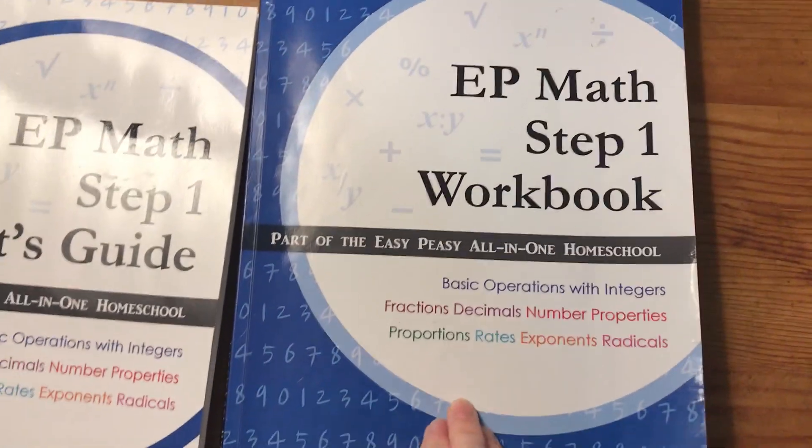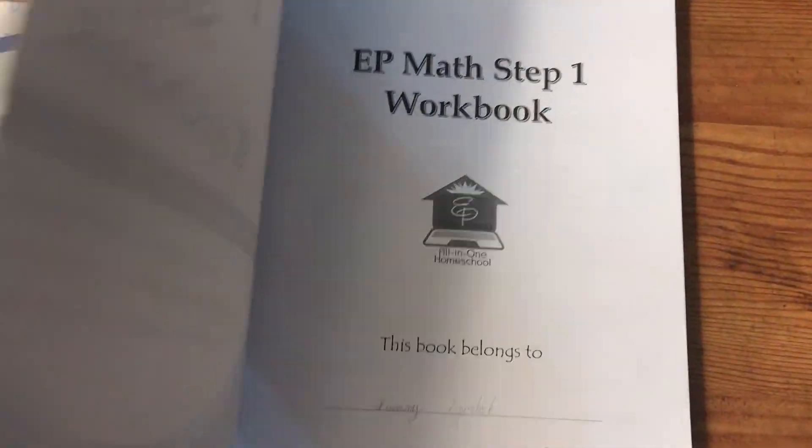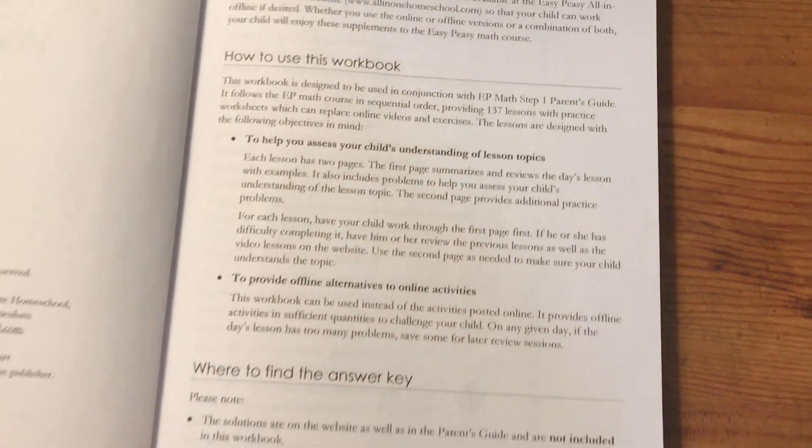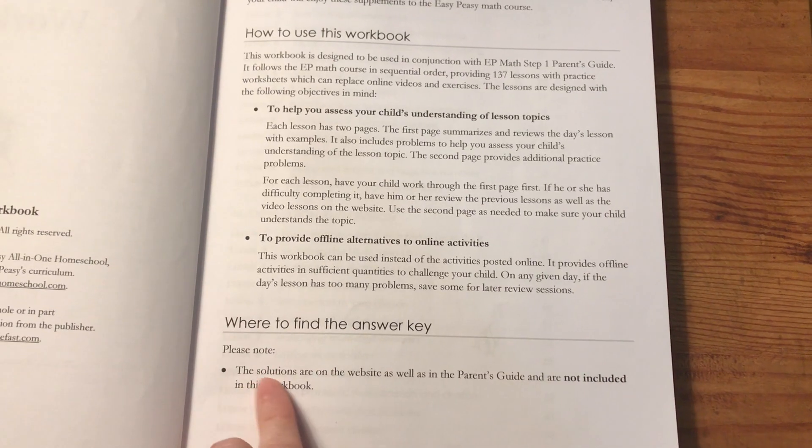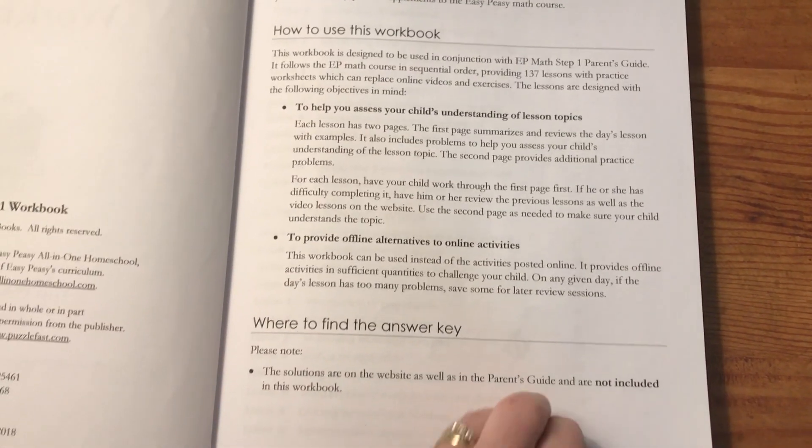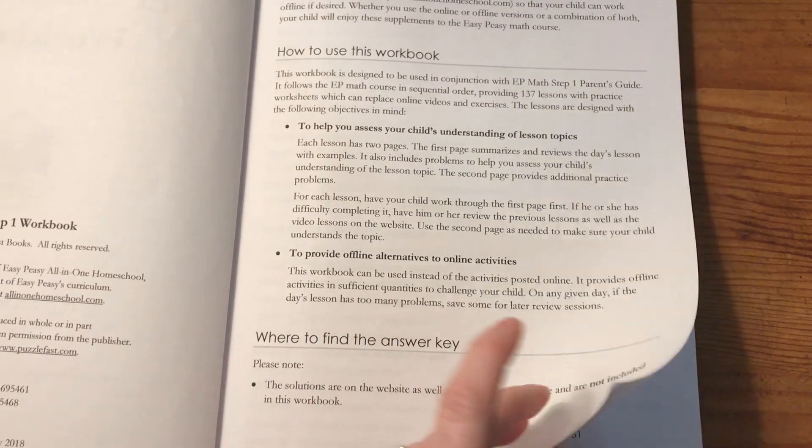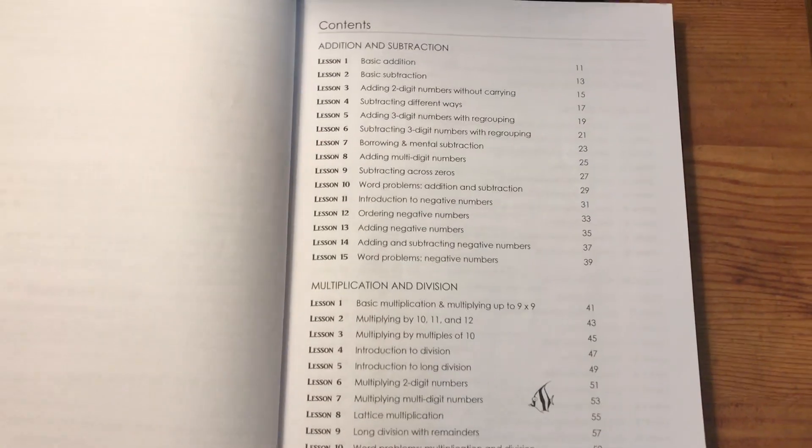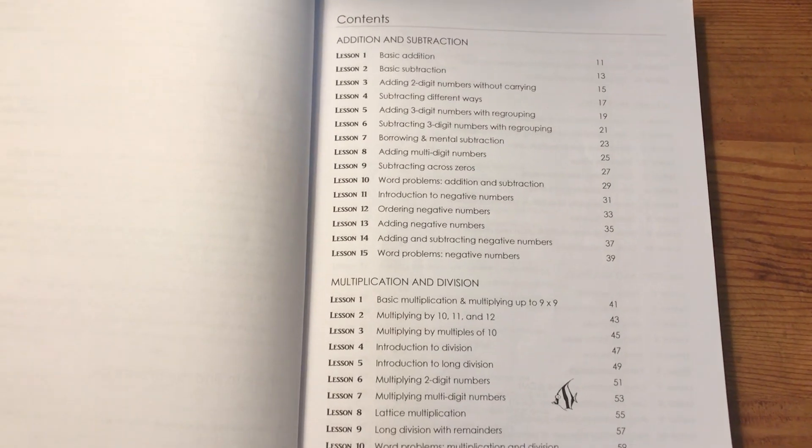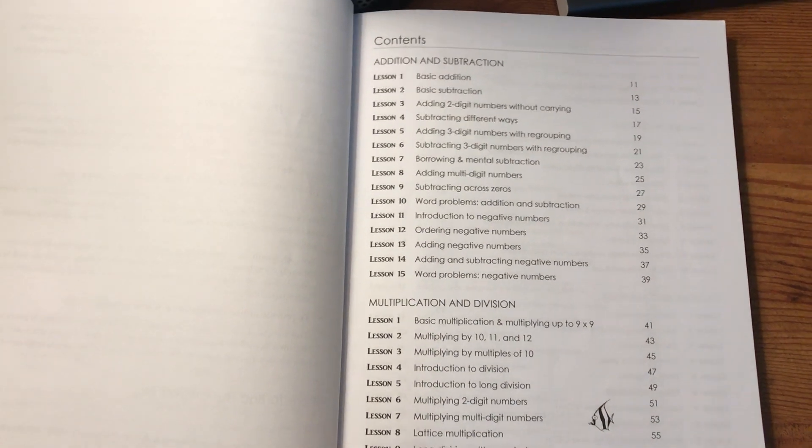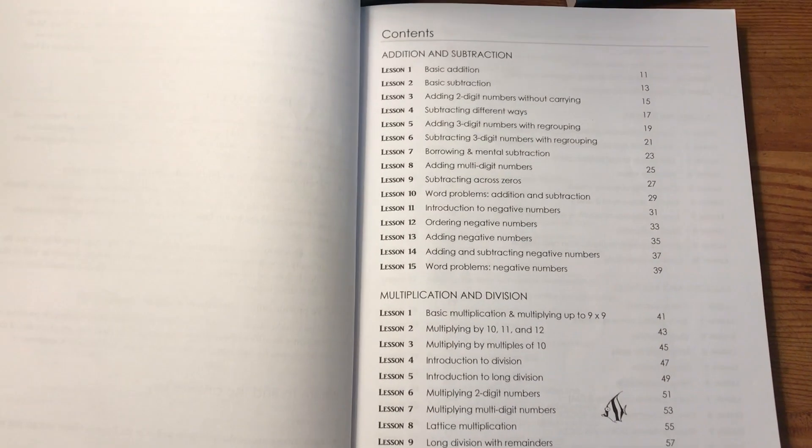Then I have the actual step one workbook. It says the solutions are on the website as well as the parent's guide and are not included in this workbook. This course is available completely free online on allinonehomeschool.com. You do not have to purchase these workbooks. You can do the entire course completely free online.